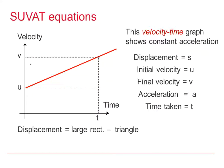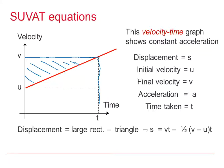We can get a fourth SUVAT Equation by finding the area under the curve as the area of a big rectangle minus a triangle. The area of the big rectangle is VT, and the triangle is a half times (V minus U) times T. Again, V minus U equals AT, therefore S equals VT minus a half AT squared is our fourth SUVAT Equation.